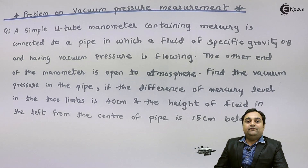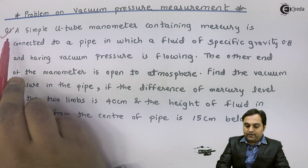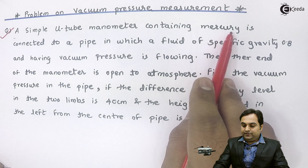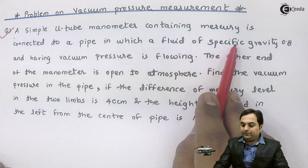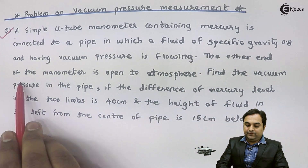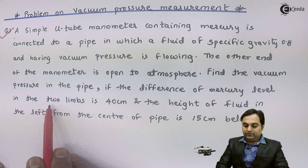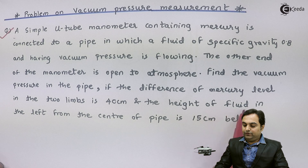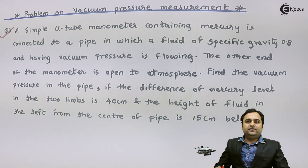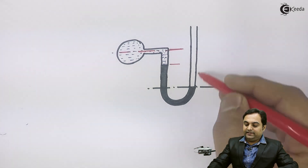Hello friends. In this video we will see a problem on how to measure vacuum pressure by using a simple U-tube manometer. For that I have a question here: a simple U-tube manometer containing mercury is connected to a pipe in which a fluid of specific gravity 0.8 and having vacuum pressure is flowing. I have drawn the diagram here — this diagram indicates a U-tube manometer for vacuum pressure measurement.